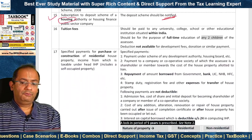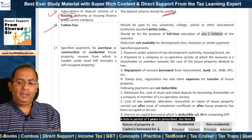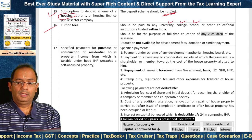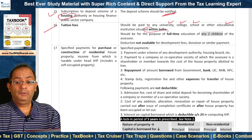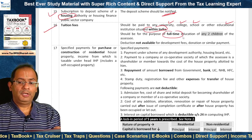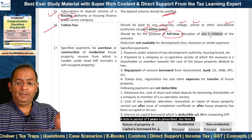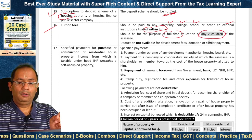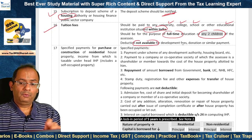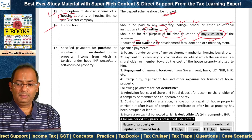Sixteenth, tuition fees paid to any University, College, School, or other educational institution situated within India — not outside India. It should be for full-time education, not part-time education, and there is a limit of any two children of the assessee. Deduction is not available for development fees, donation, or similar payments.